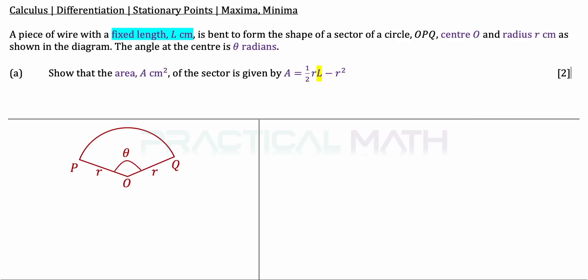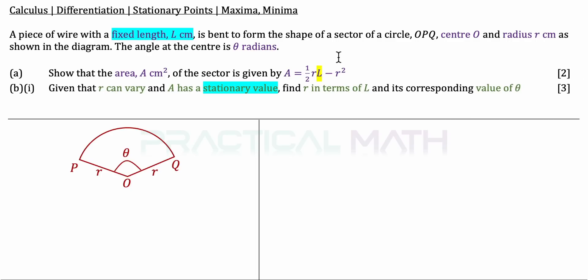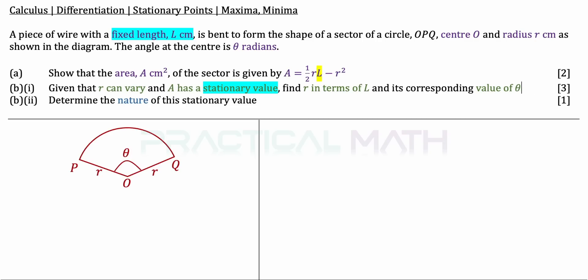In part B1, given that R can vary and A has a stationary value, find R in terms of L as well as its corresponding value of theta — that is a three-mark question. In part B2, determine the nature of this stationary value, and that is a one-mark question.